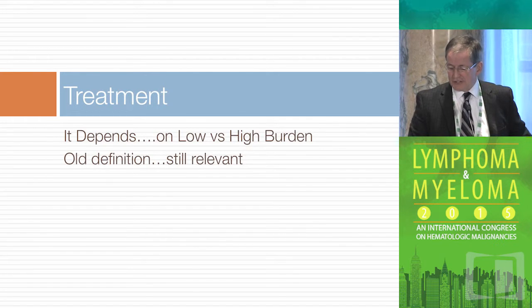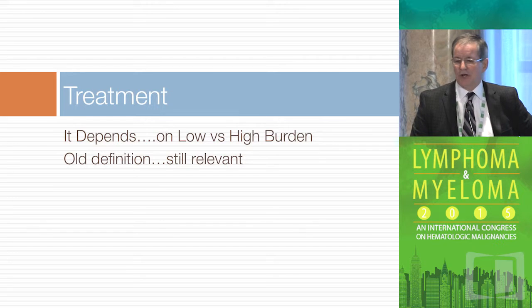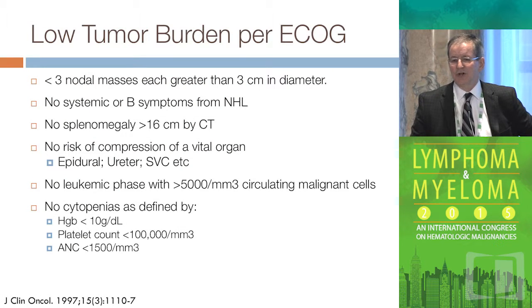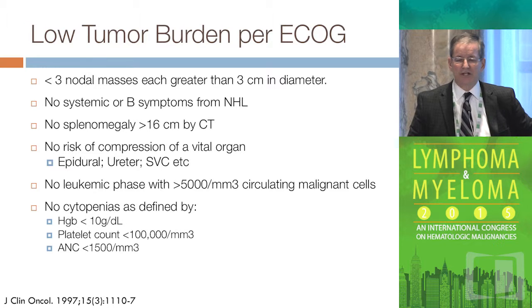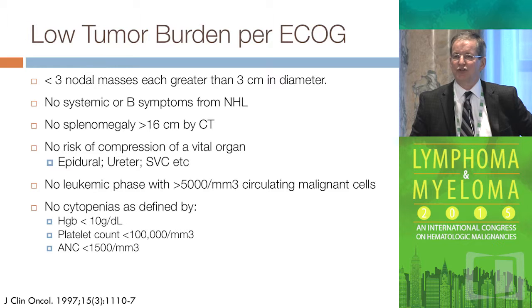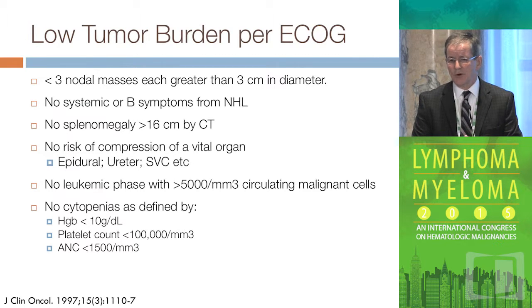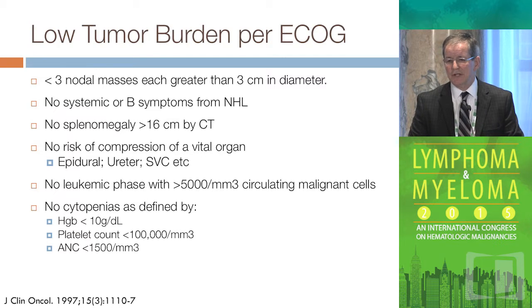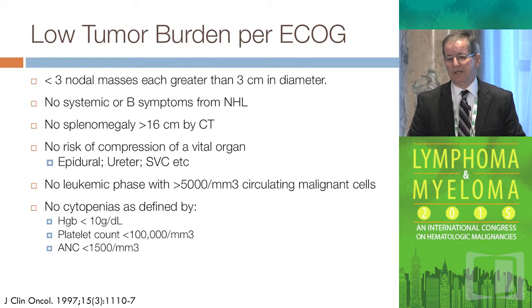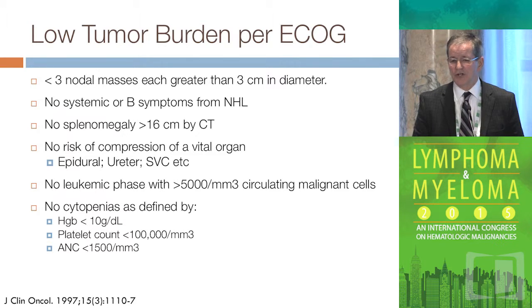Going back to treatment, we're going to use some old data called the GELF criteria — a 1997 publication. It's referred to as the definition of low tumor burden: no symptoms, not a lot of big nodes, no big spleen, no compression of a ureter, and good blood counts.